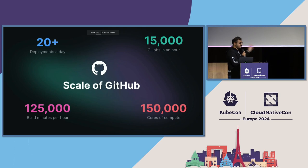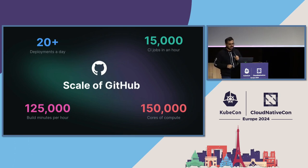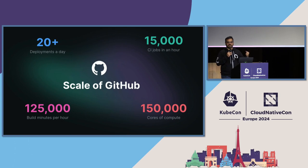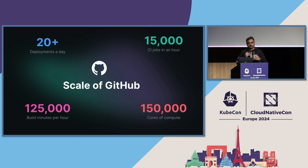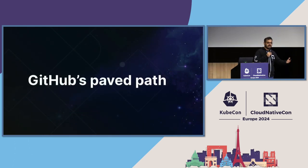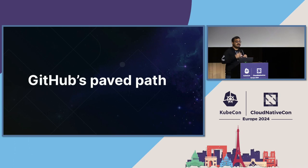Now that you know the scale of GitHub on the development side, how is some of this possible? What does this look like for a typical engineer or on the platform side? For GitHub engineers to efficiently code, build, and ship software, we provide them with what we call a paved path. There might be similar terminologies from other organizations, but at GitHub we call it the paved path — a comprehensive suite of automated tools, applications, processes, and runtime platforms.